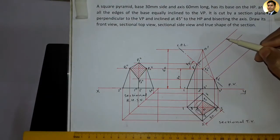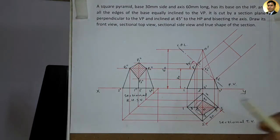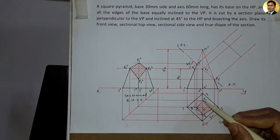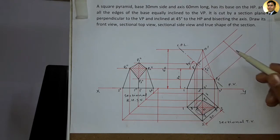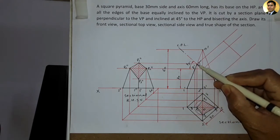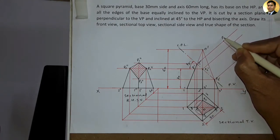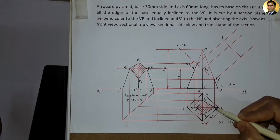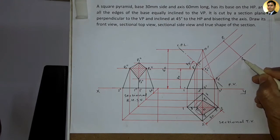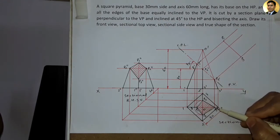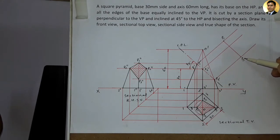Now hum yahaan par cutting plane line ko parallel line draw karenge. Yahaan P1, P2, P3, aur P2 points hain, woh yahaan transfer karenge. Toh yahaan point P1 hai, woh yahaan P1-dash se milega, aur yahaan milega point P1. Same way, yahaan P3 hai, woh yahaan P3-dash se milega, aur yahaan milega point P3. So yahaan P1 aur P3 ko hum yahaan P1 aur P3 ke roop mein transfer karenge.